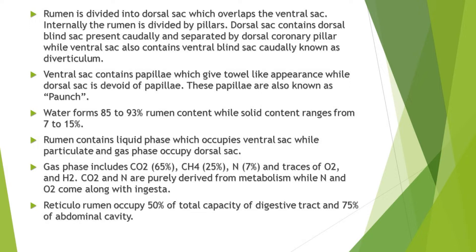Several gases that compose the gaseous phase of the dorsal sac include carbon dioxide which is 65 percent, methane which is 25 percent, nitrogen 7 percent, and traces of oxygen and hydrogen. Carbon dioxide and methane are derived from metabolism while nitrogen and oxygen come along with ingesta. Rumen is the largest of all the stomach compartments and rumen along with reticulum occupy 50 percent of total capacity of the digestive tract and 75 percent of the abdominal cavity.